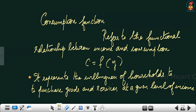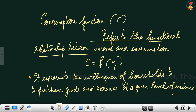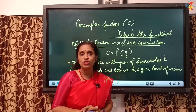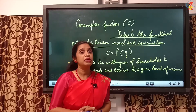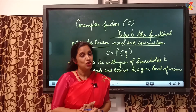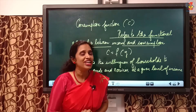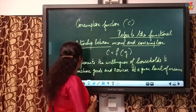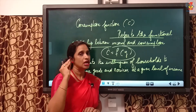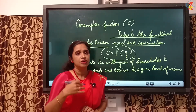The consumption function is denoted by the letter C. It refers to the functional relationship between income and consumption. The consumption function can be represented in the form of a function: C is equal to f of Y. When you learned about the component of aggregate demand, you learned this equation C is the f of Y, which means consumption always depends on income.